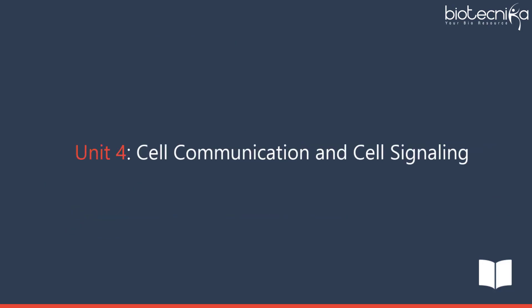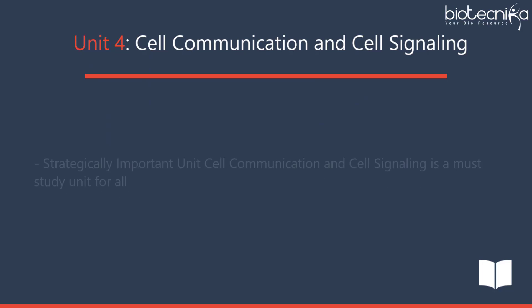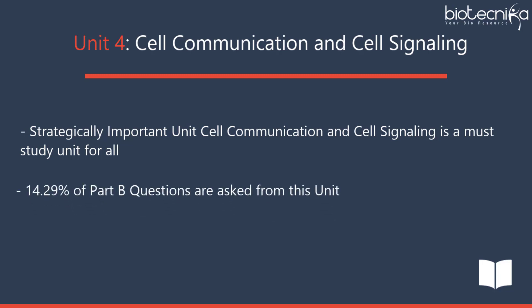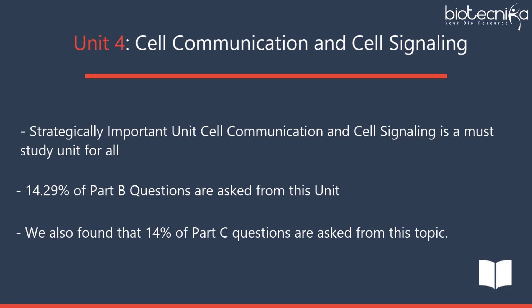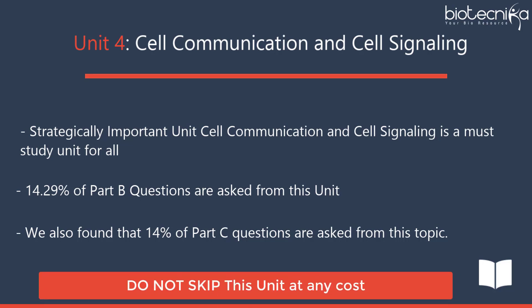Unit 4 – Cell Communication and Cell Signaling is a strategically important unit and a must-study for all aspirants. 14.29% of Part B questions are asked from this unit, and 14% of Part C questions are asked from this topic. Do not skip this unit at any cost.